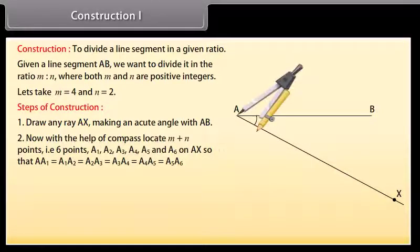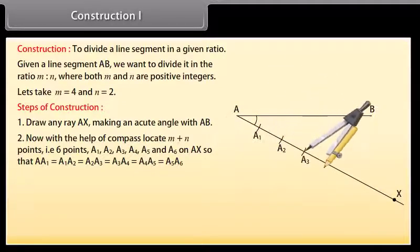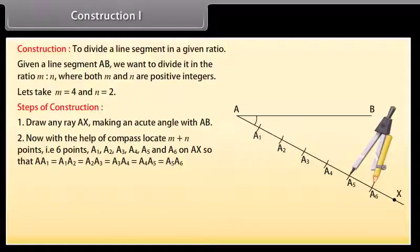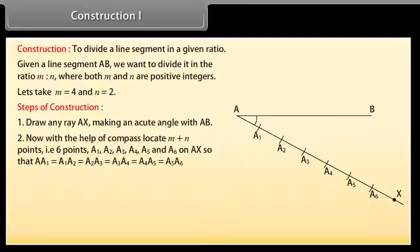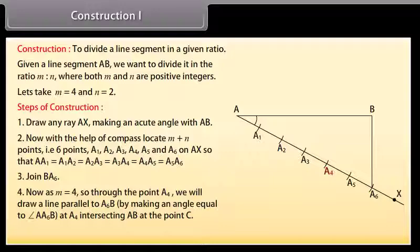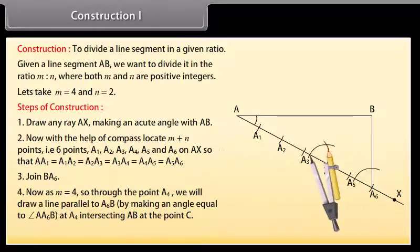Now with the help of a compass, locate M plus N points — that is 6 points, A1, A2, A3, A4, A5 and A6 — on AX so that AA1 = A1A2 = A2A3 = A3A4 = A4A5 = A5A6. Join BA6. Since M equals 4, through the point A4, draw a line parallel to A6B by making an angle equal to A6B at A4, intersecting AB at the point C.